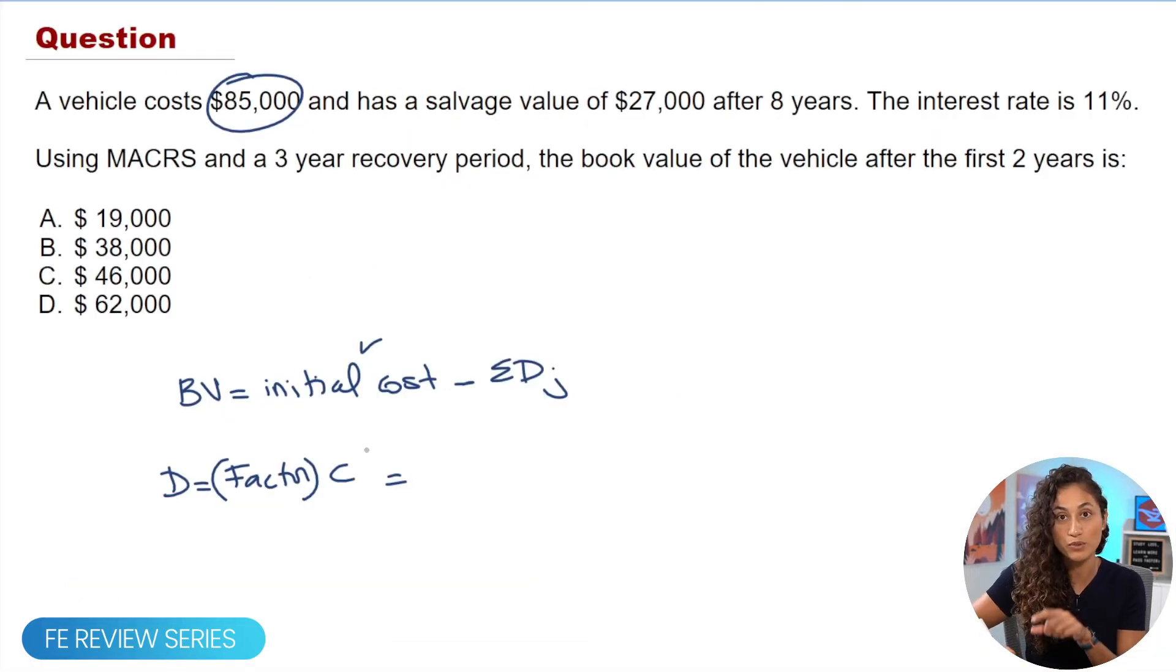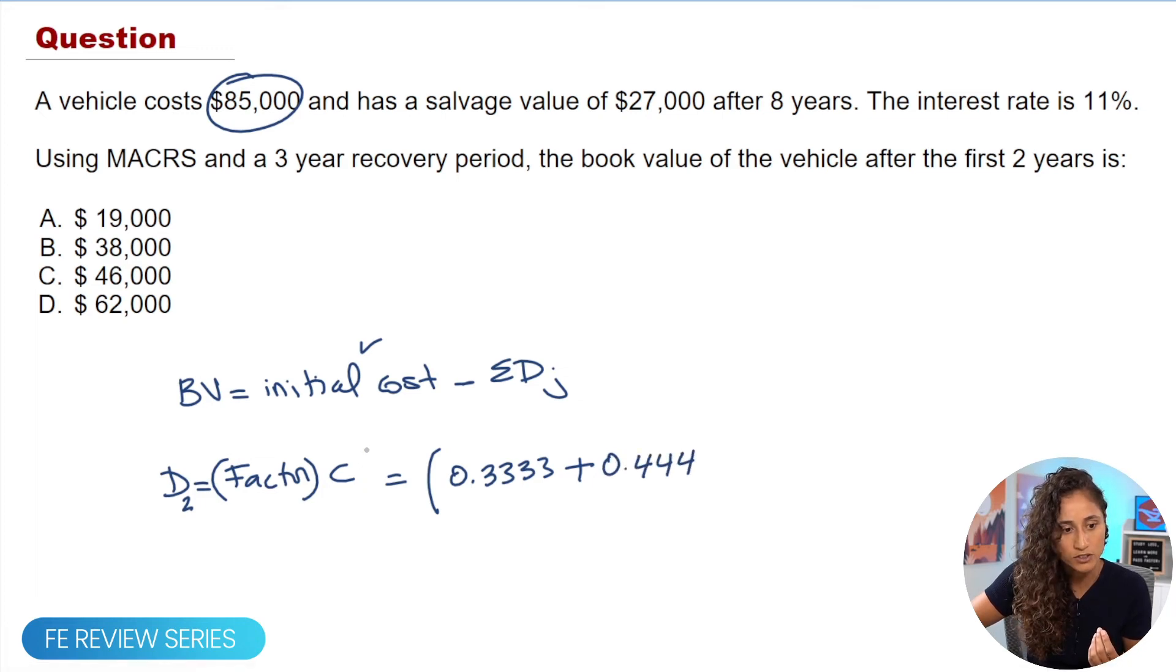Now let's plug in the numbers in this equation. And then also we can add two here, because we want to find the depreciation at year two. And that's why we're adding the two values. So the first factor here, we're going to have is 0.3333, I just went ahead and divided them by a hundred so that way I don't forget. And then plus 0.4445, and then we're going to multiply it by the initial cost, which is $85,000.